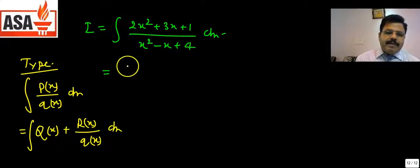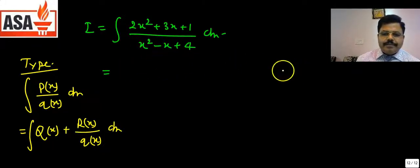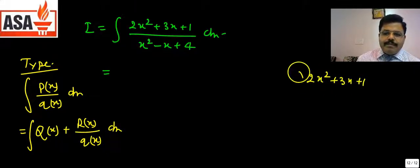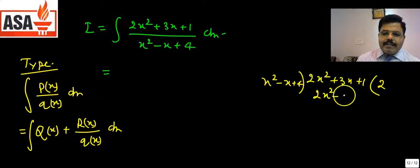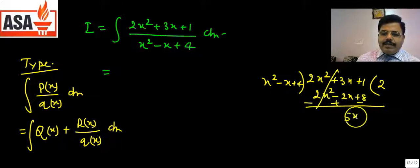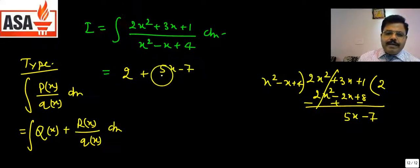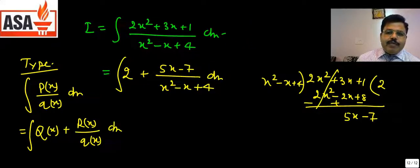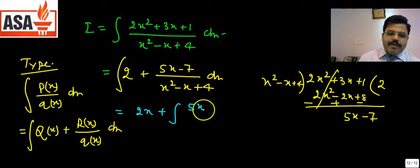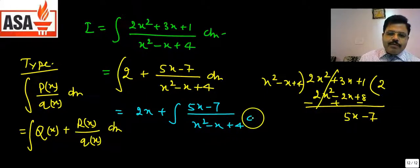Dividing 2x² + 3x + 1 by x² - x + 4: multiply 2 × (x² - x + 4) = 2x² - 2x + 8. Subtracting, the remainder is 5x - 7. So the quotient is 2 and the remainder is 5x - 7. The integral becomes ∫ 2 dx + ∫ (5x - 7)/(x² - x + 4) dx = 2x + ∫ (5x - 7)/(x² - x + 4) dx.